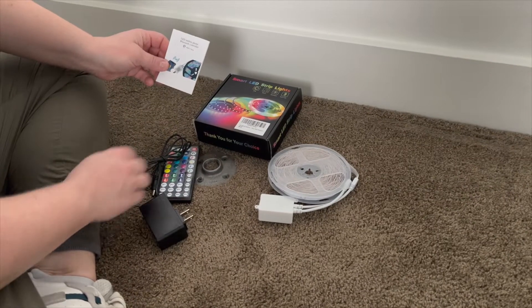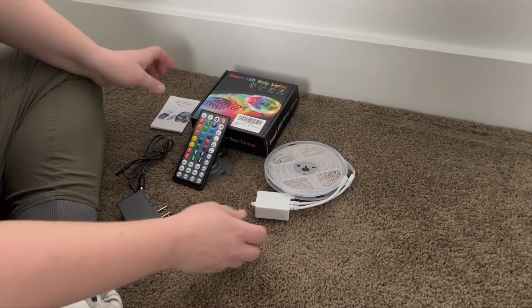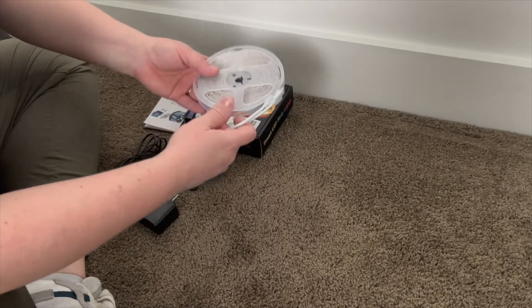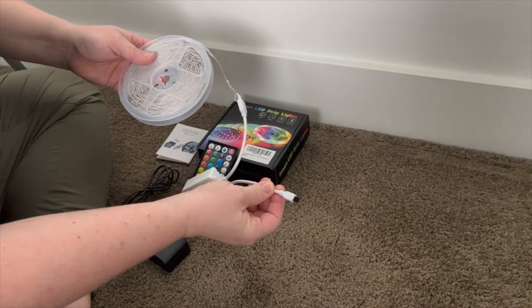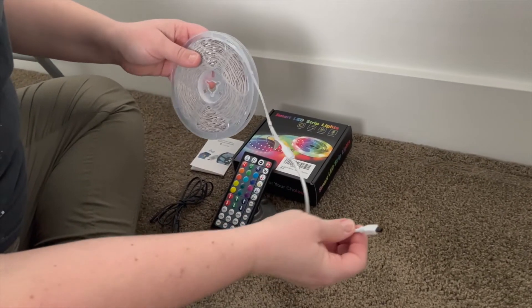It comes with a little instruction booklet, your remote, and then of course the lights. You can add one more set of lights onto this if you need. For our room, we just need this one roll so it should be fine.